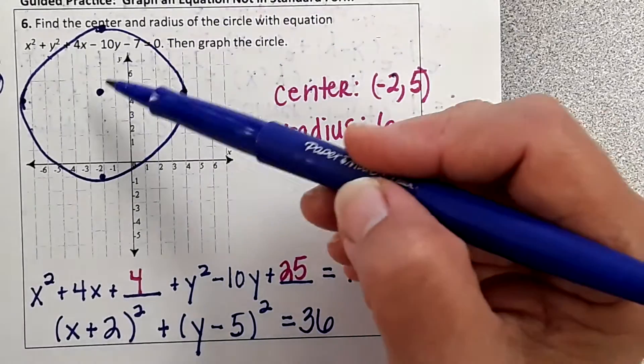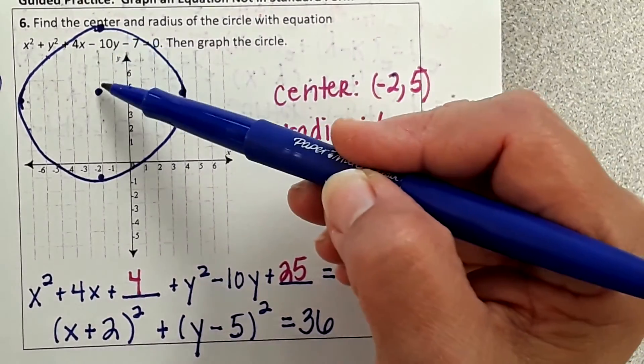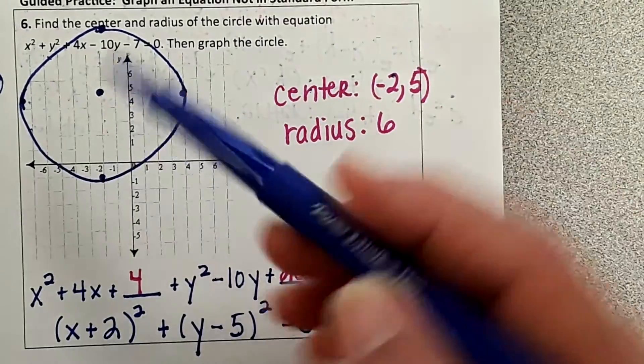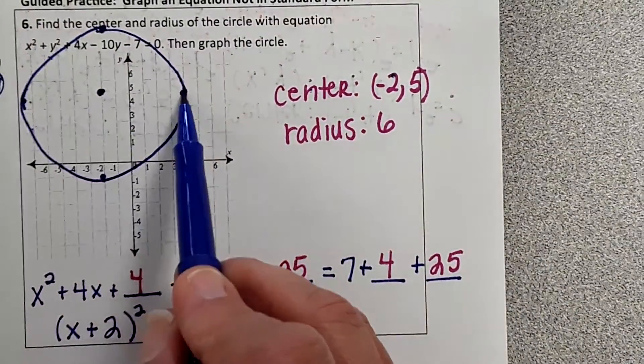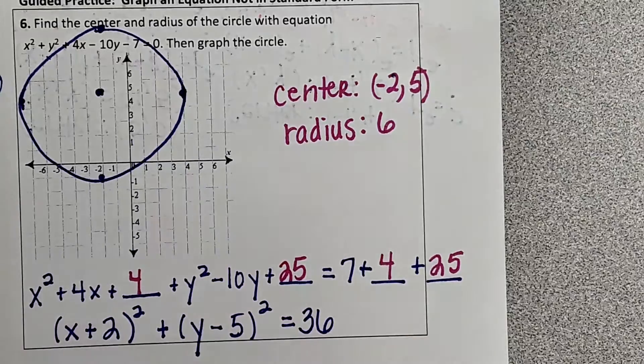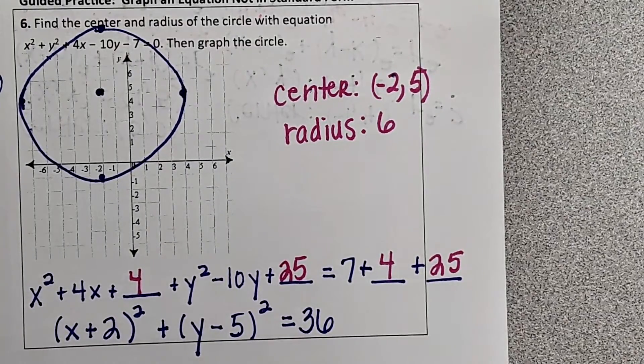And again how I did that: from my center I went up 6, from my center I went down 6, from my center I went right 6, from my center I went left 6. And that is how you graph a circle.